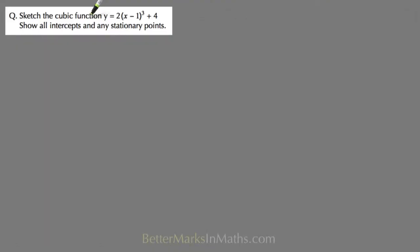In this question you have to sketch the cubic function y equals 2 in brackets x minus 1 cubed plus 4 and show all intercepts and any stationary points. So first of all this is a cubic function and when it's in this form you can get the stationary point of inflection from the equation.